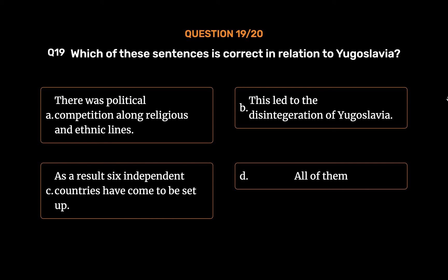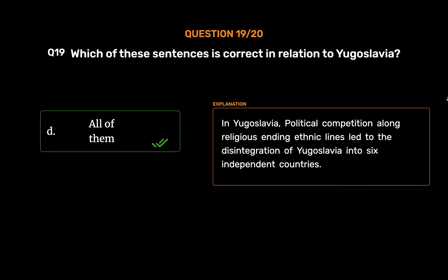The correct answer is Option D: All of them. In Yugoslavia, political competition along religious and ethnic lines led to the disintegration of Yugoslavia into six independent countries.